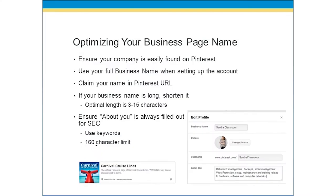We're going to create a business page and we have to make sure that we optimize everything about this page. So many people go in randomly and you really have to be careful of that. First off, you want to make sure that your company is easily found on Pinterest. Make sure your business name is in there — not just an acronym — but you want to make sure the full business name is there when setting up the account. So when people search for you, they're going to find you.